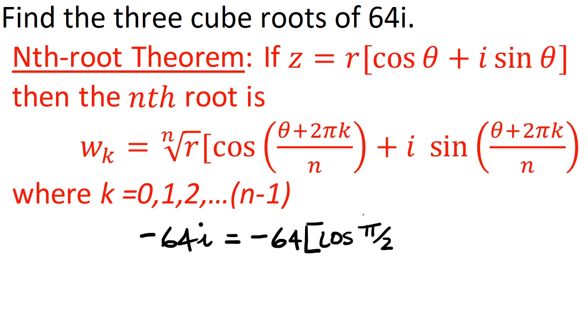I'll make the real part 0 plus i times the sine of π/2. That'll make the imaginary part 1, and that'll multiply by the -64. That'll give us -64i.